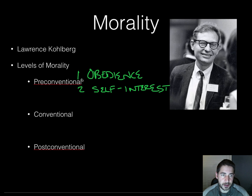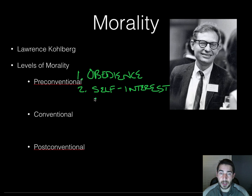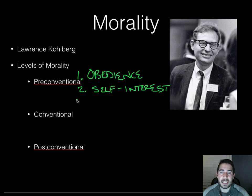Obedience is your level of morality based on: am I going to get punished for this or not? If I'm not going to get punished, I can do it. If I am going to get punished, I shouldn't do it. That's the level of morality of a lot of kids — they do things because they want to, and if they know they're going to get punished, they don't. Stage two is self-interest — the 'what's in it for me' mentality. They might do something even if they get punished, if it serves their self-interest. The level of morality is looking out for number one. This is kid stuff.